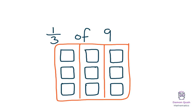Now within each third I can see how many I've got to find my answer. So of course in 1 third of that group I have 3. So 1 third of 9 is 3.